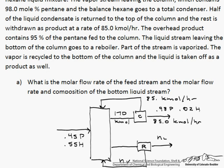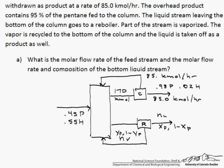So here we have some x sub p, which is the mole fraction in the liquid of the pentane, and 1 minus x sub p, and here we have a y sub p and 1 minus y sub p, where those are the mole fractions in the liquid and in the vapor, respectively.